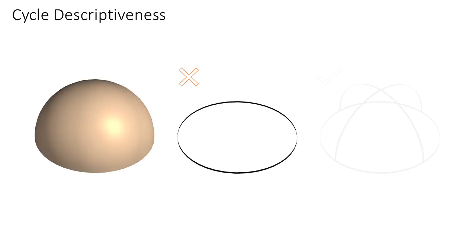Visually descriptive networks are cycle descriptive, that is, their cycles unambiguously describe the geometry of the surface patches they surround.